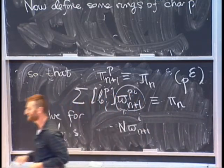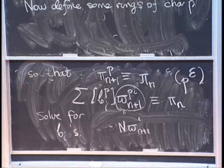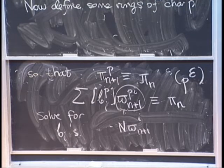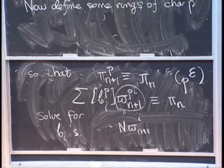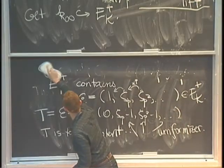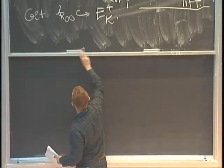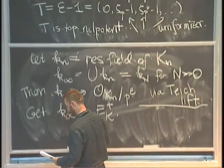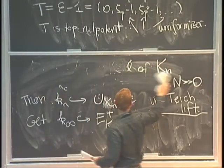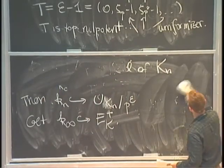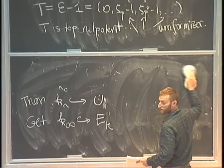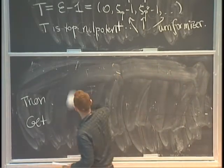So after that crucial lemma, this shows that you can construct elements in E_K^+. In fact, E_K^+, this funny ring of characteristic p, winds up being a power series ring also.